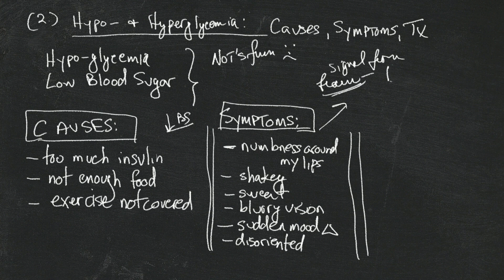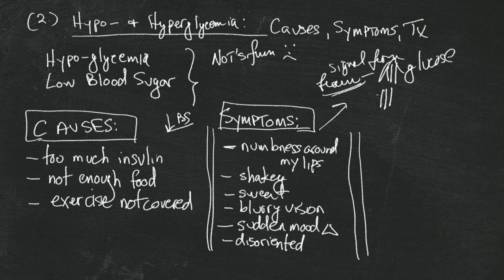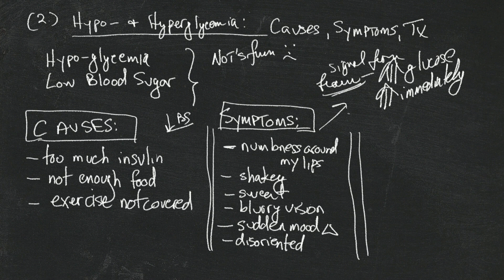Little kids have a sudden change of mood and you can become disoriented. What's important to know is that these symptoms are a signal from our brain that uses glucose to function, that we need more glucose and we need it immediately.